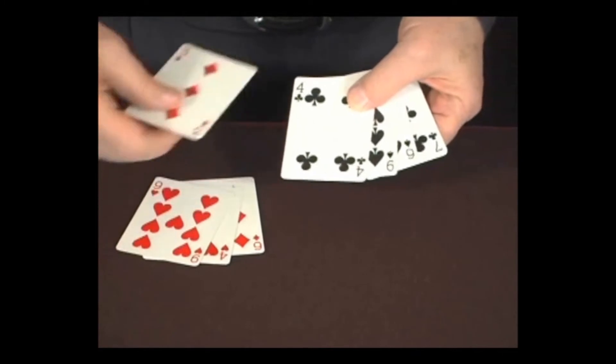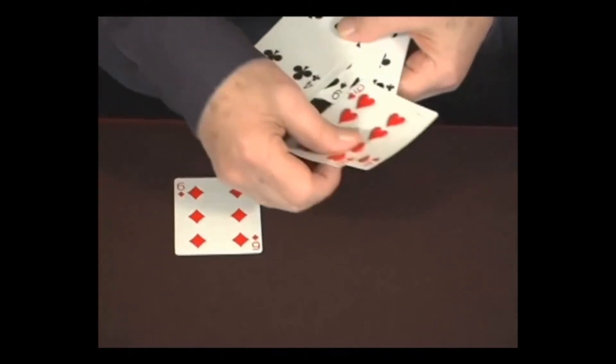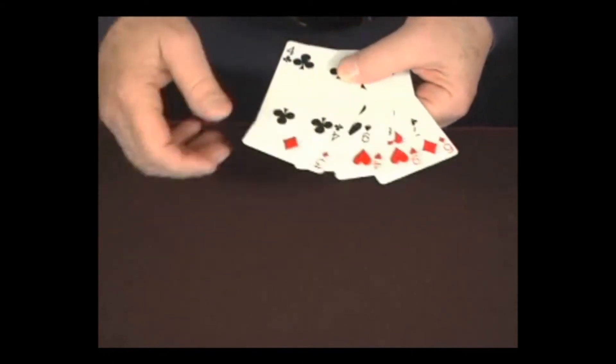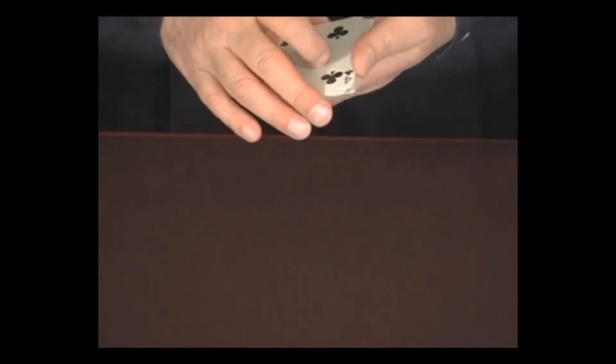Now let's do this face up. I'm going to take a red one and place it in between, another red one and place it in between, another one, and another one. So now they're mixed. No monkey business.